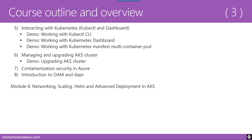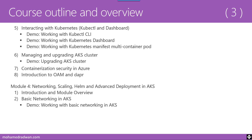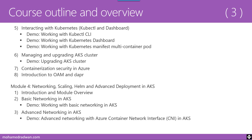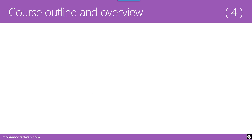Module Four, Networking, Scaling, Helm, and Advanced Deployment in AKS, begins with an introduction and module overview. Lesson Two covers Basic Networking in AKS with a demo. Lesson Three covers Advanced Networking in AKS, including a demo for using Azure Container Network Interface (CNI) in AKS and a second demo for configuring networking using Kubenet. Lesson Four covers Understanding Scaling Applications in AKS — both auto-scaling and manual scaling — followed by a demo on scaling applications in AKS.